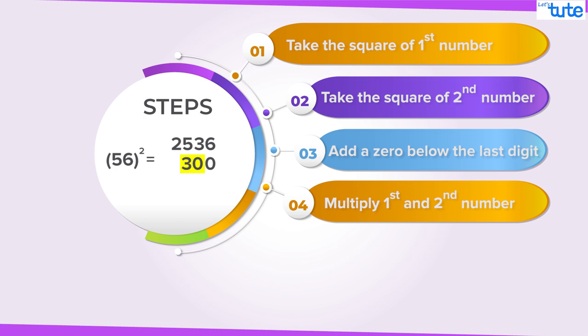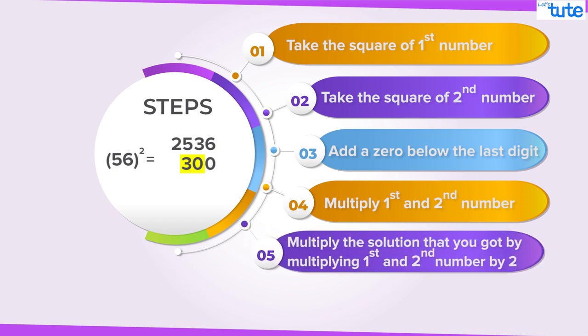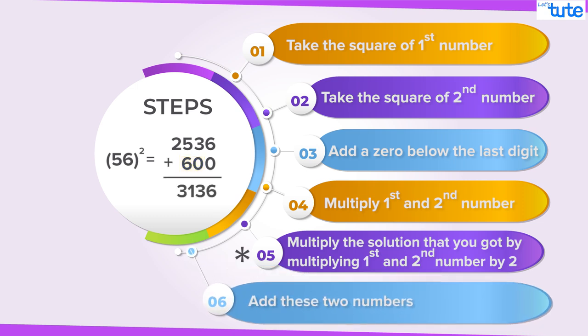Fourth, multiply first and the second number. Fifth, and really one of the most important step is, multiply the solution that you got by multiplying first and second number by 2. Guys, this is a very important step. Please do not forget it. The final step is, add these two numbers.